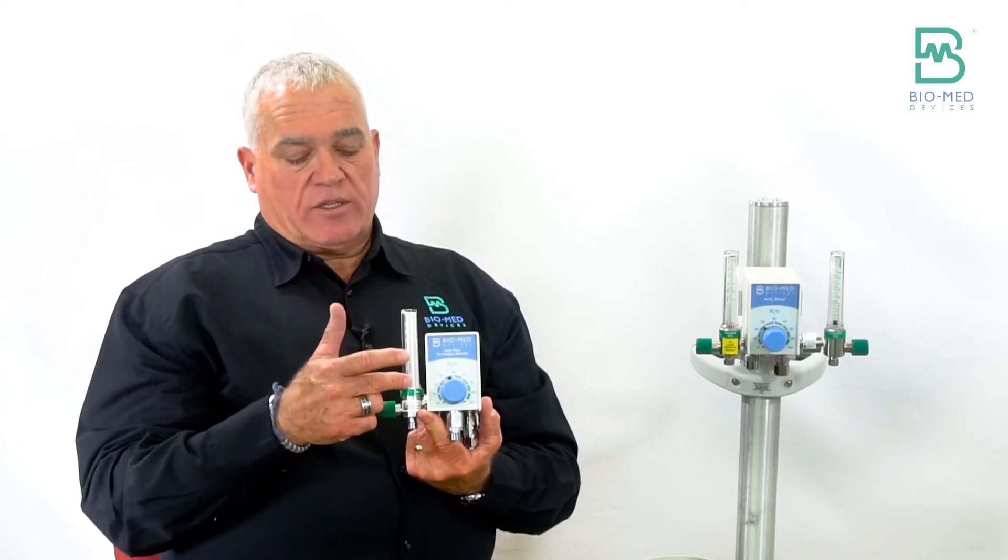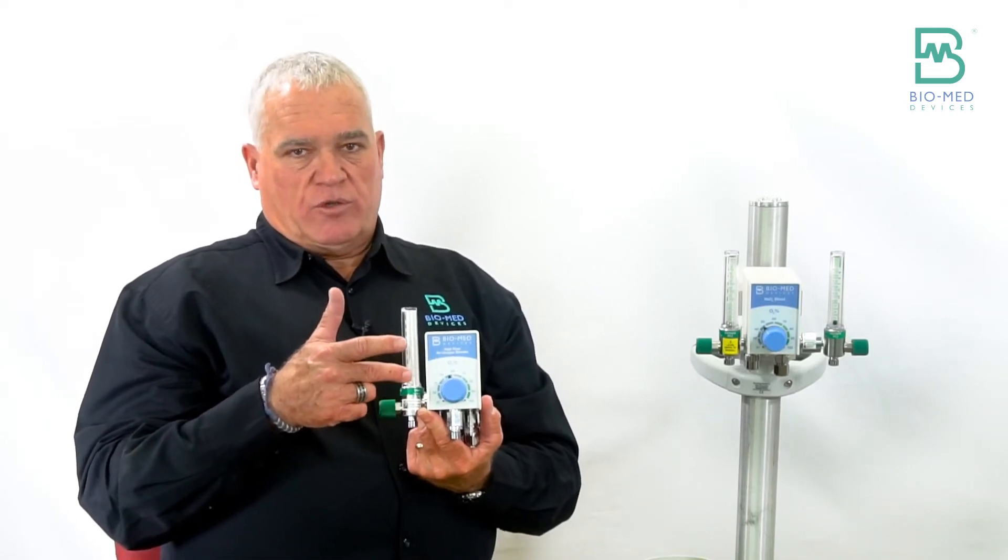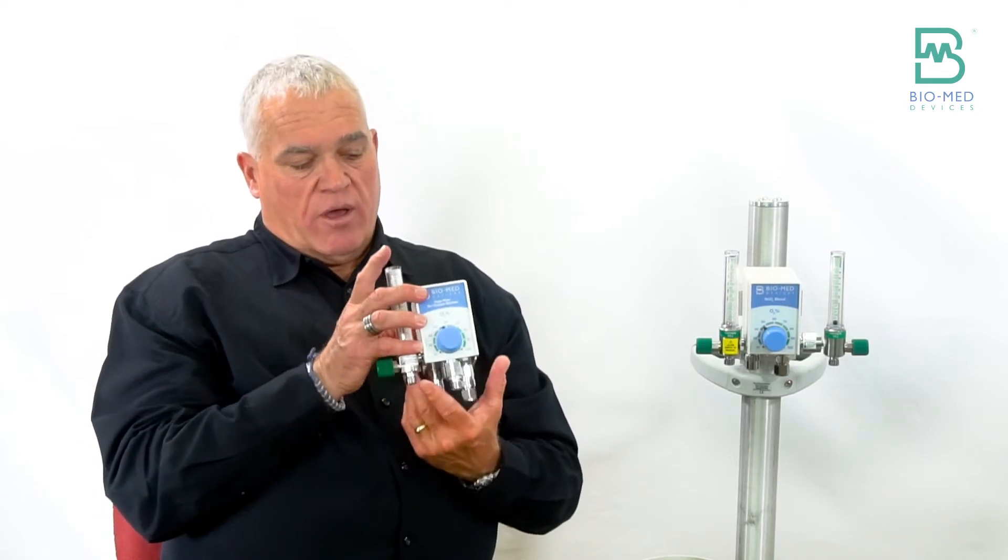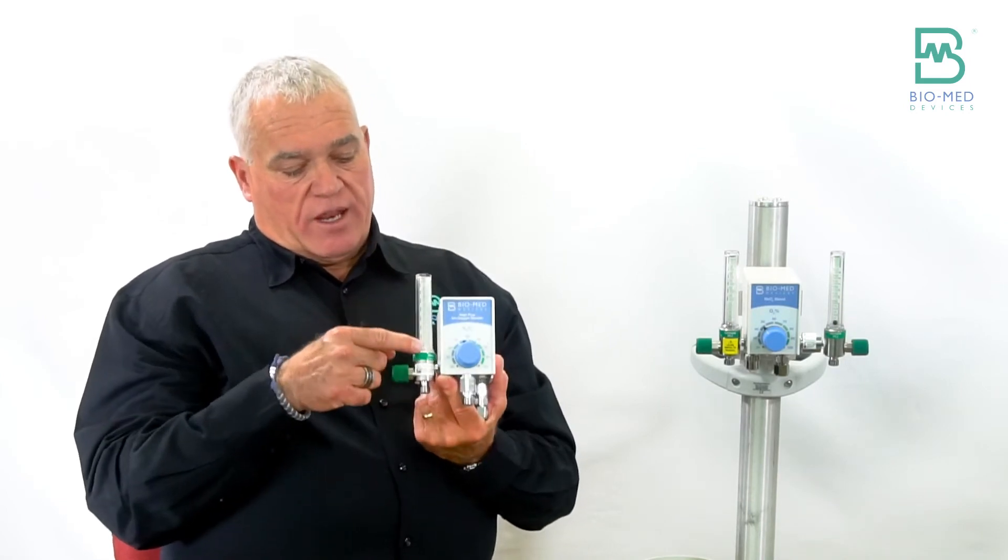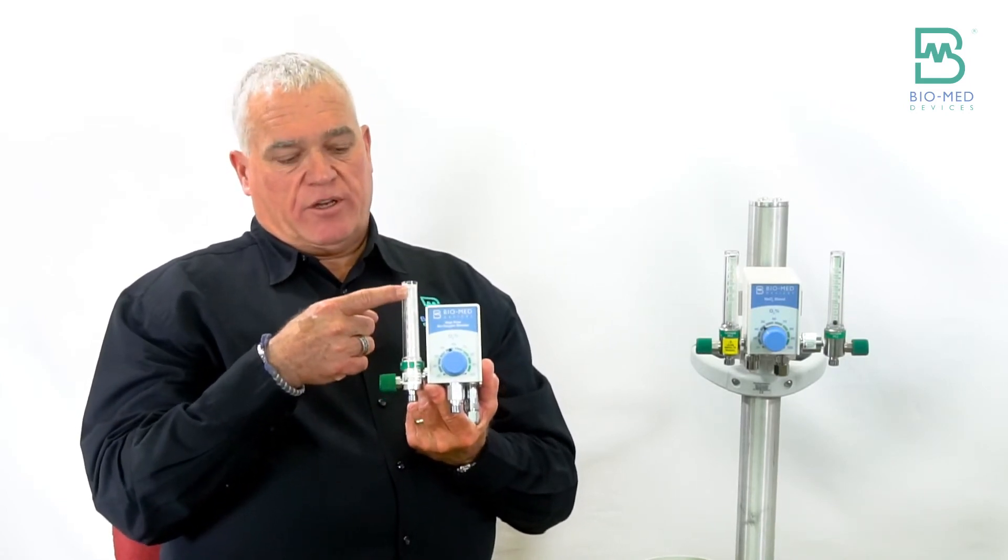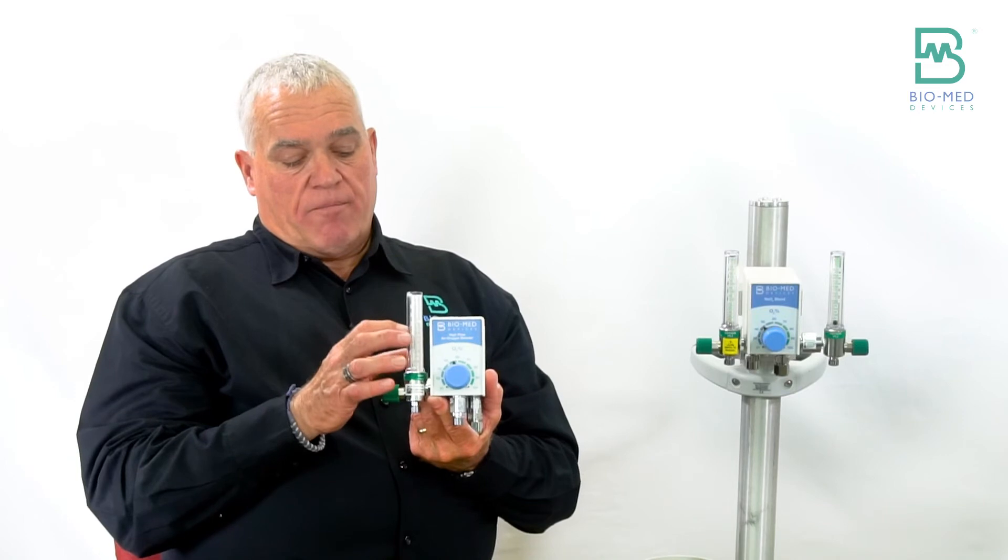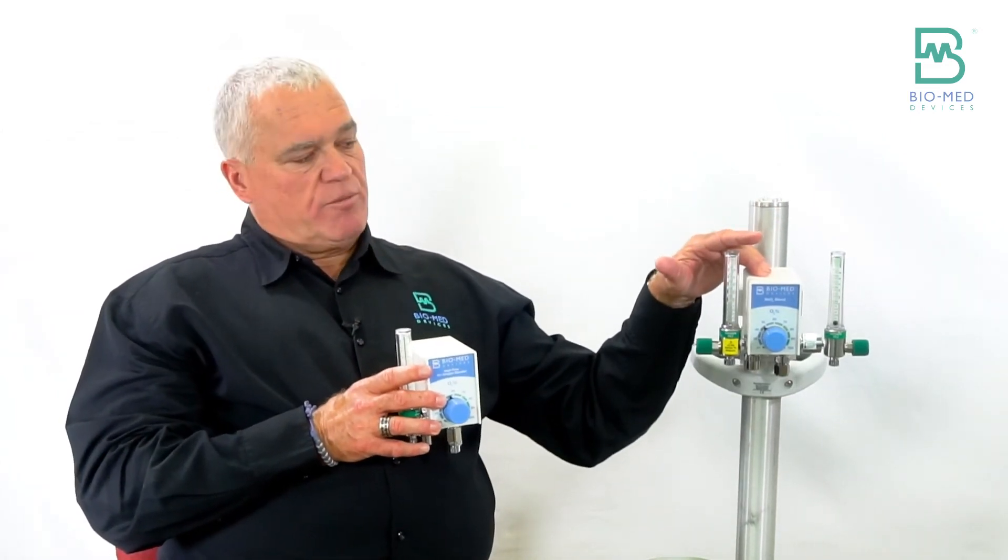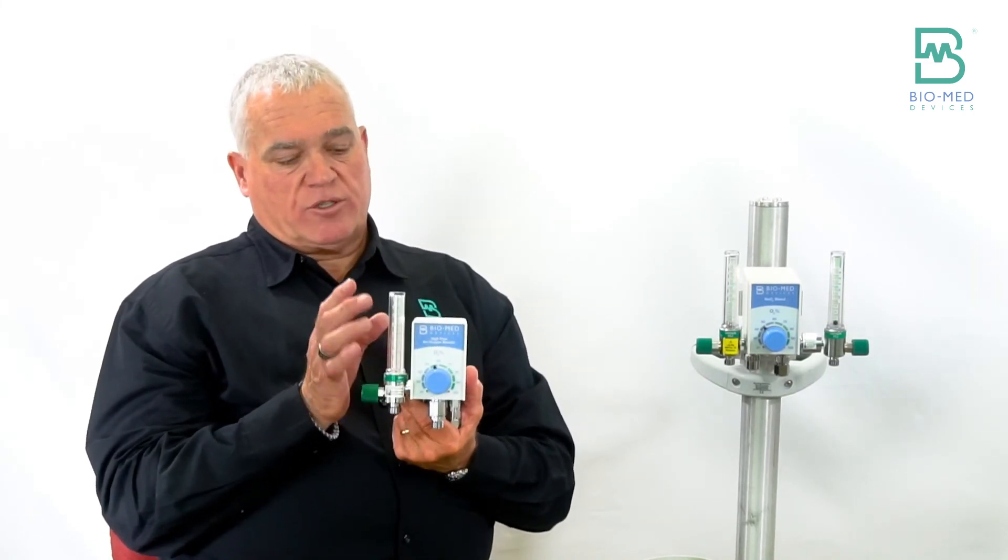In that case, we might want to deliver flows to a patient with a high flow nasal cannula up to sixty liters a minute. So we have our 2002 F70D that has a zero to seventy liter flow meter hard mounted to the side, so we're taking up a lot less space and you can dial those flows. A low flow blender has a maximum output of thirty liters a minute, whereas the high flow will output up to 120 liters a minute.